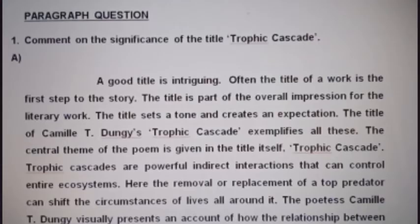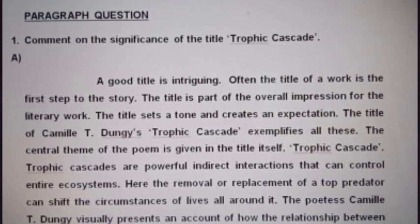Now paragraph question number 7: comment on the significance of the title Trophic Cascade. A good title is intriguing. Often, the title of a work is the first step to the story. The title sets a tone and creates an expectation. The title of Kamal Tidan's Trophic Cascade exemplifies all these. The central theme of the poem is given in the title itself — Trophic Cascades are powerful interactions that can control the entire ecosystem. Here the removal or replacement of a top predator can shift the circumstances of lives all around it.